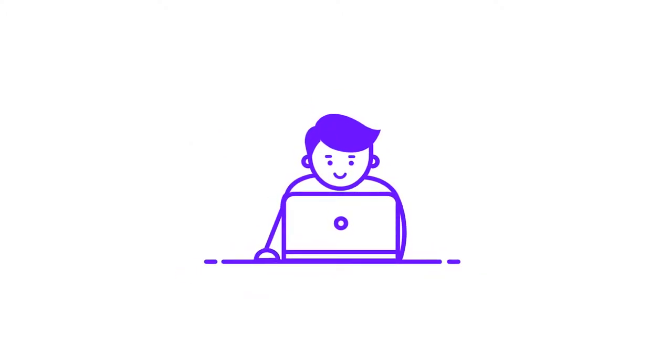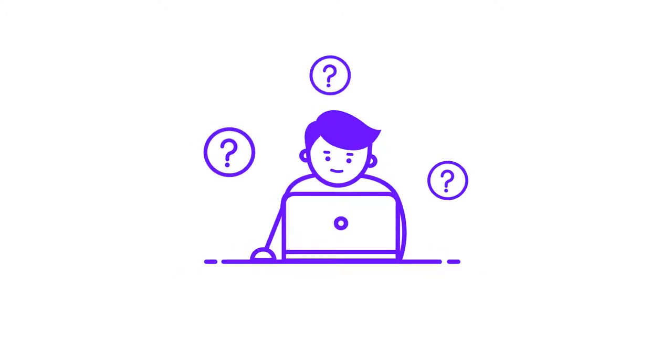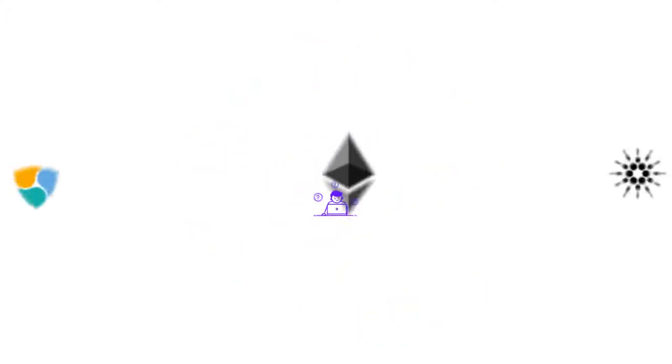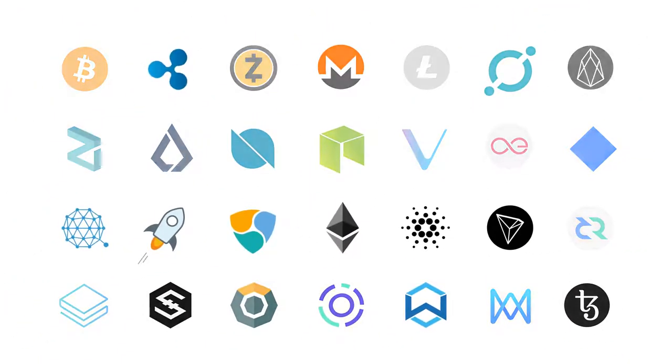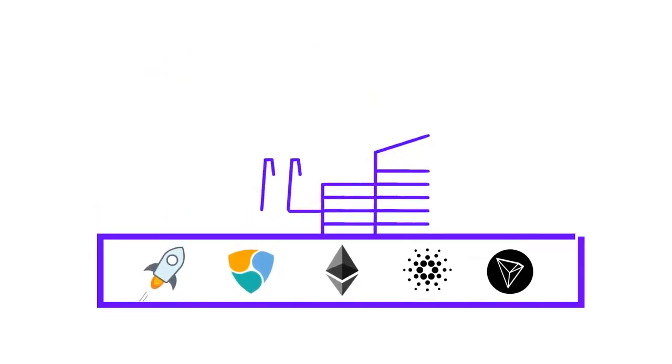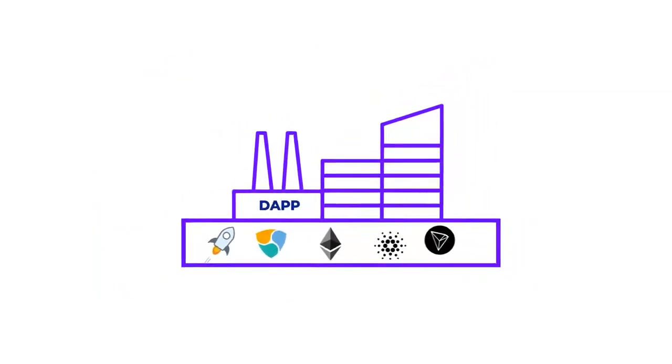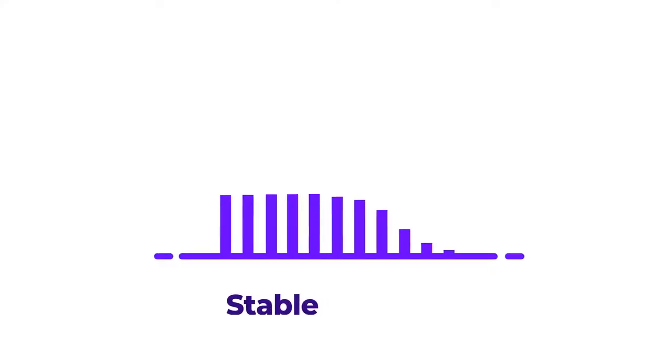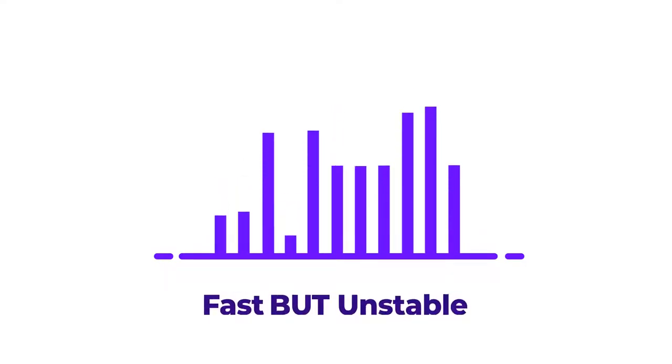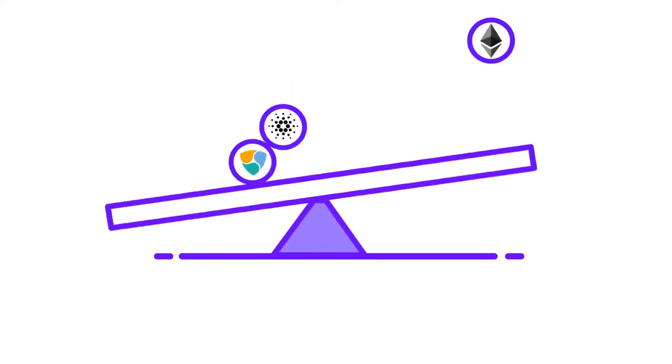You are a dApp developer — which protocol are you going to choose to develop your dApp on? The problem is platform risk. There are too many protocols and we don't even know who the winner is going to be. Every blockchain protocol is unique but none is perfect. Some are stable but slow, some are fast but unstable. All these blockchains have different pros and cons and there's no perfect solution. That's why it's risky to rely on one blockchain as a platform.